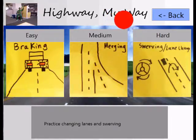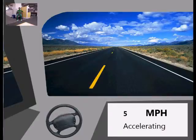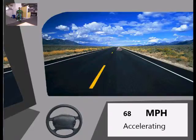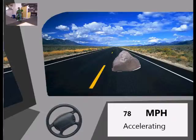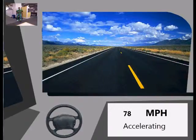In the hard task, the user must avoid an obstacle on the road by making a quick lane change. Here, a boulder will shortly appear. Watch out! Change lanes quickly! Perfect!